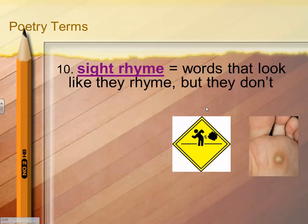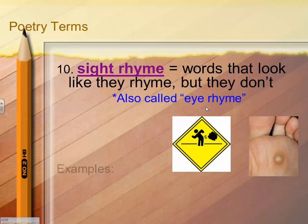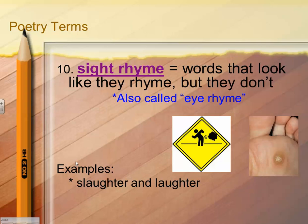Next one is sight rhyme — words that look like they rhyme, but they don't. It's also called eye rhyme. For example, slaughter and laughter — if you were a non-native English speaker reading these words for the first time, you'd think they should rhyme, but by the way they're pronounced, they do not. Fart and wort are two examples that look like they should rhyme but don't. Have and cave look like they should rhyme, but they don't.